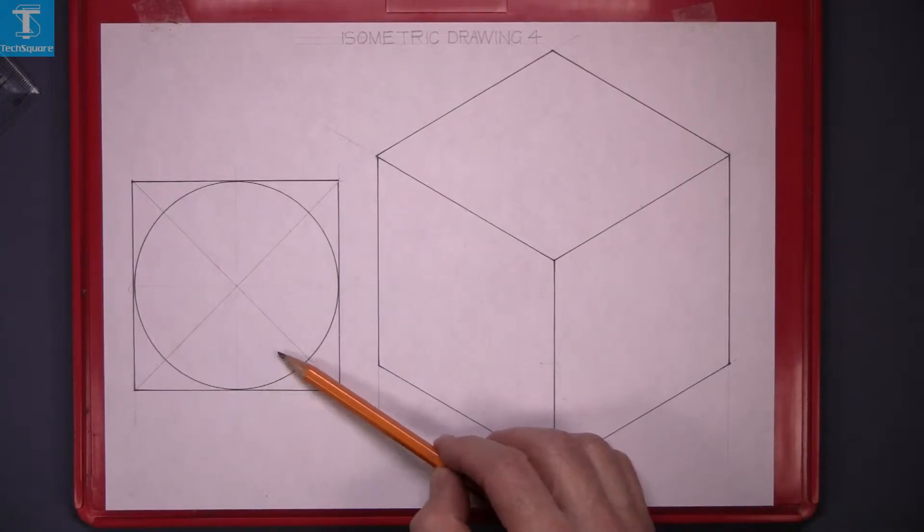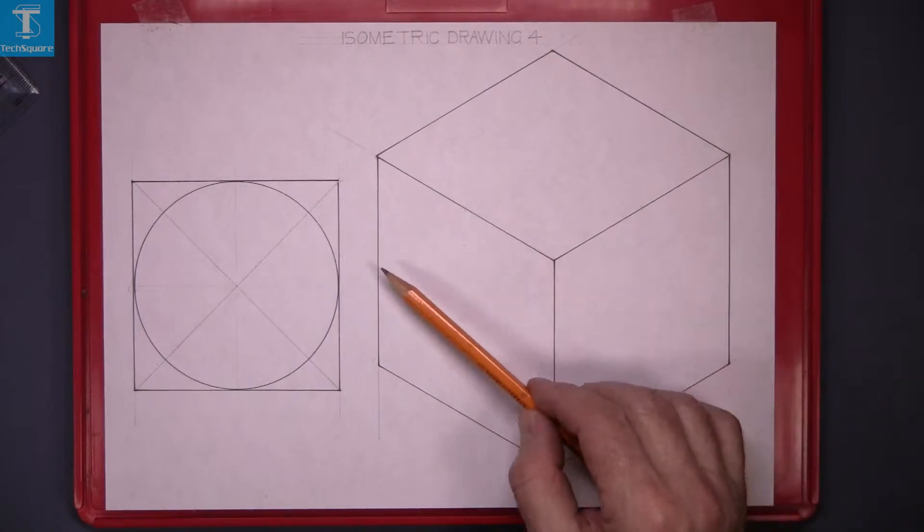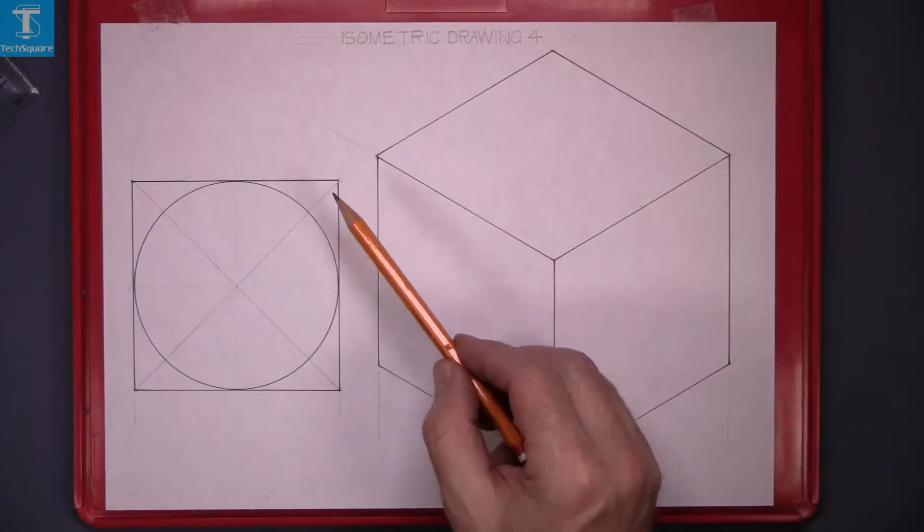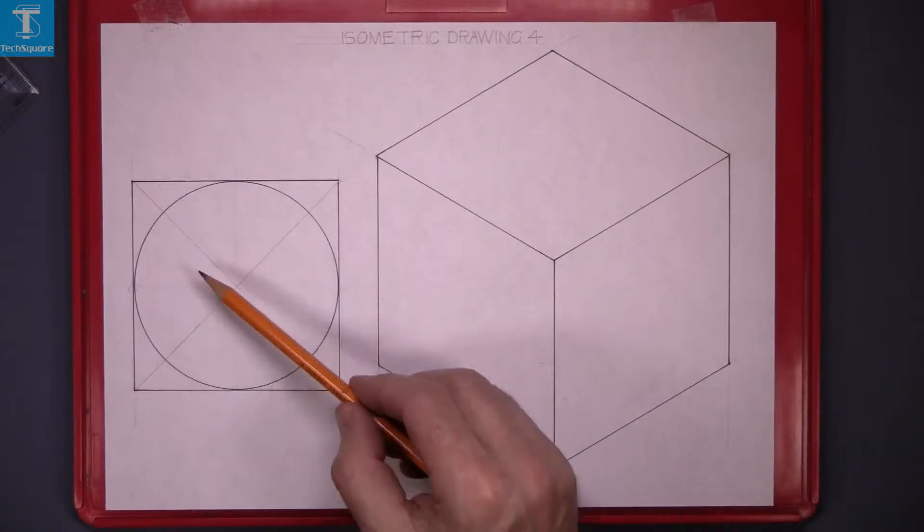So using measurements from this drawing, we then find this shape on the isometric view. Draw the diagonals.